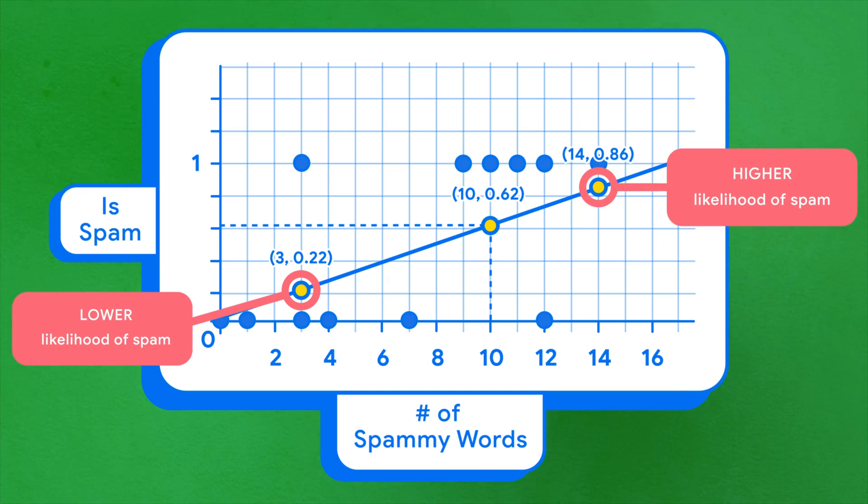But it would be more useful if a regression model predicted a formal probability, a value from 0 to 1, representing the chances the email is spam.